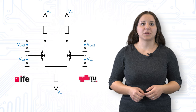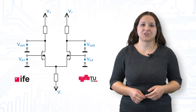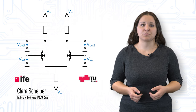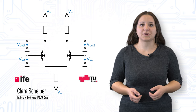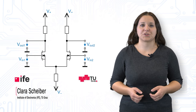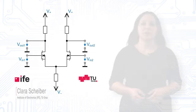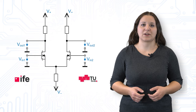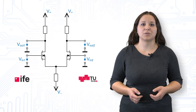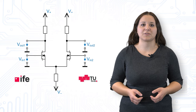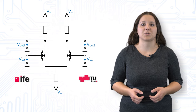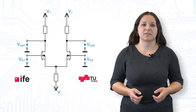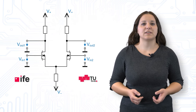In one of our last videos, we learned about the basics of differential amplifiers. These are circuits that can amplify the difference of their input voltages and are therefore very important for the input stage of operational amplifiers and comparators. To fully understand differential amplifiers and to be able to use them in practice, it is important to know how to derive the most important formulas for differential mode and common mode gain. In this video, we will therefore learn some tricks and simplifications that will make our lives easier.